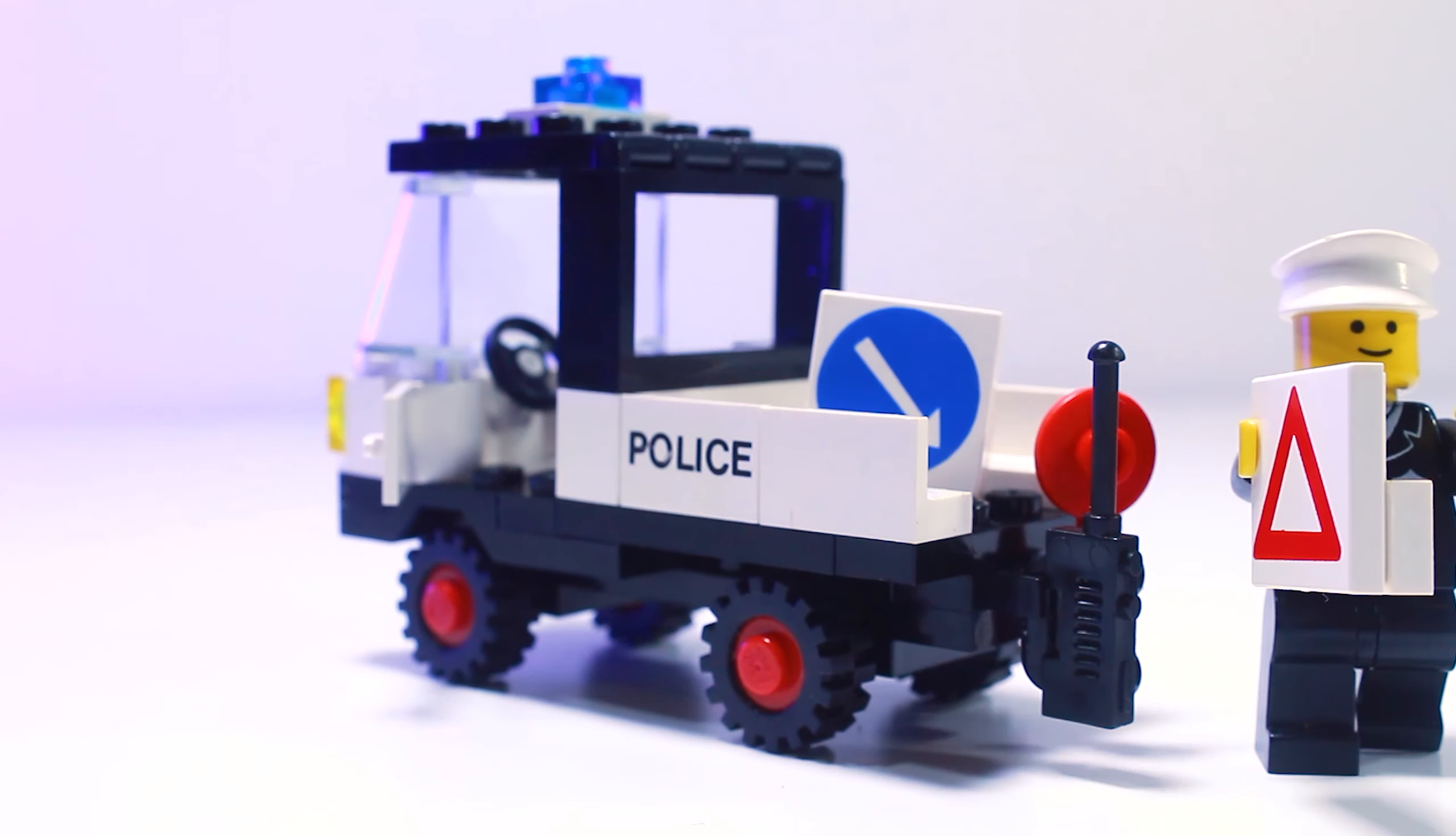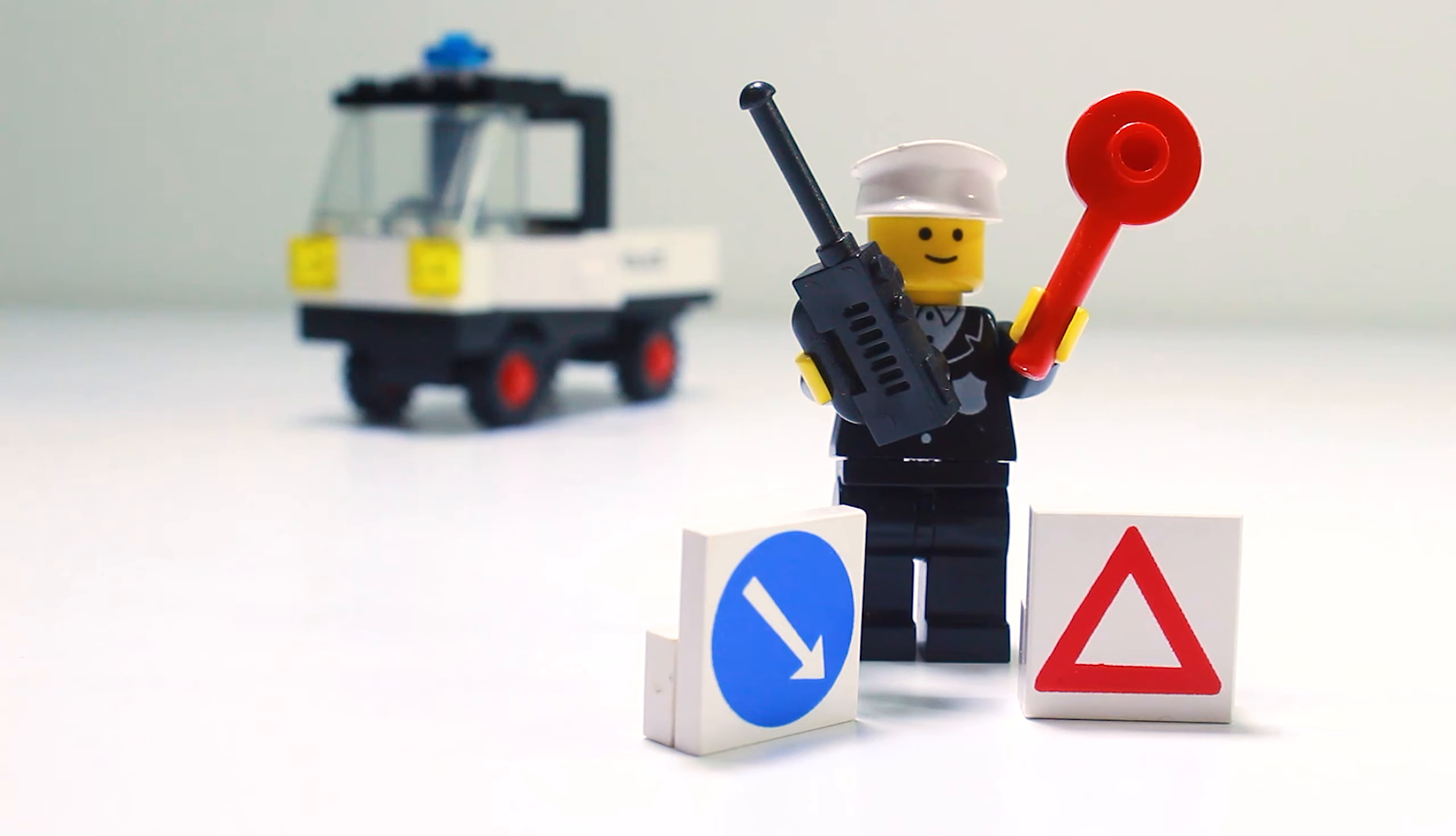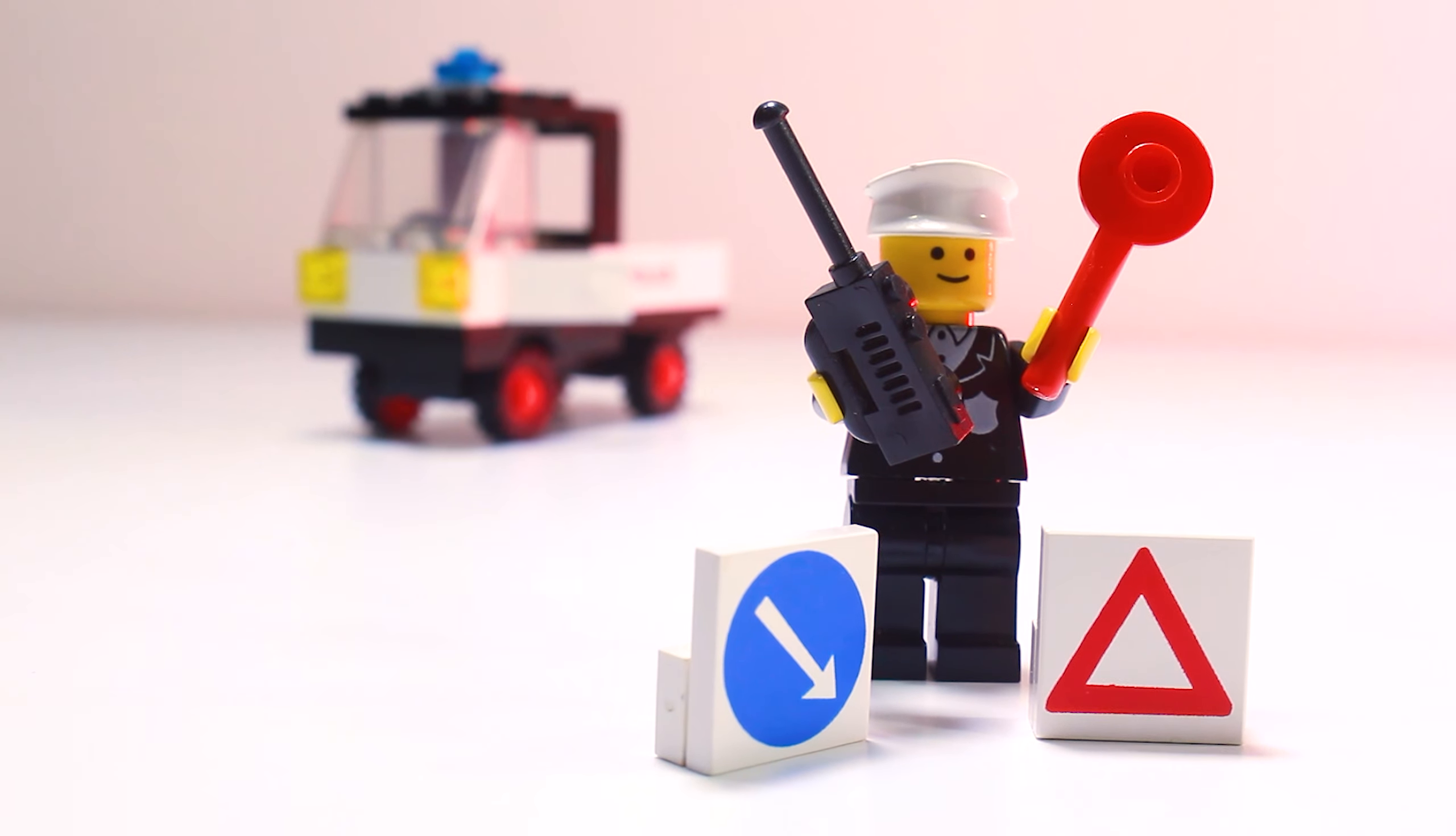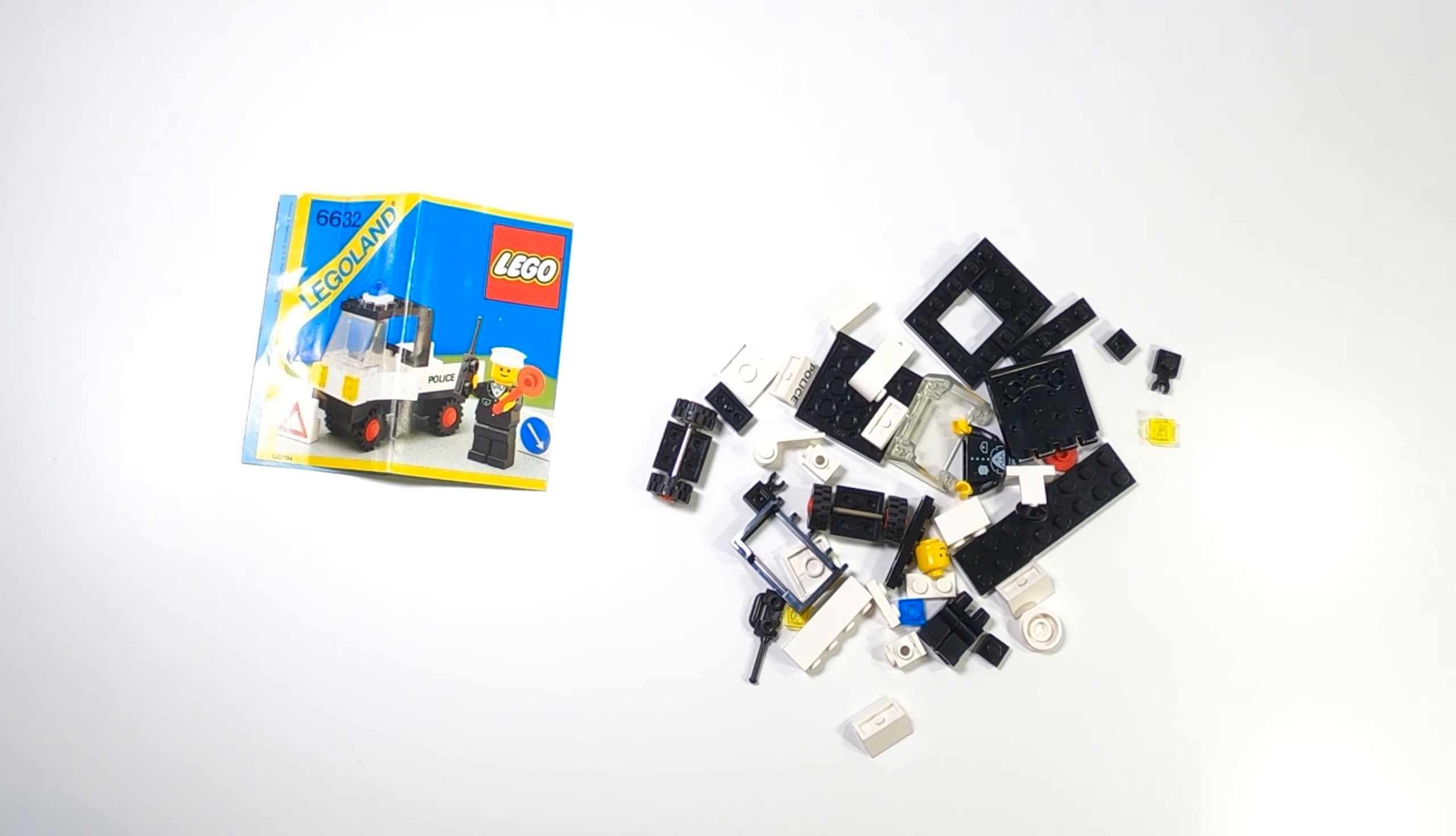This set has special sentimental value to me. I've probably owned two or three or four of these little guys over the years. I don't know why, but I kept getting them. This is set number 6632, the Tactical Patrol Truck from 1985. It has 44 pieces and one minifigure.